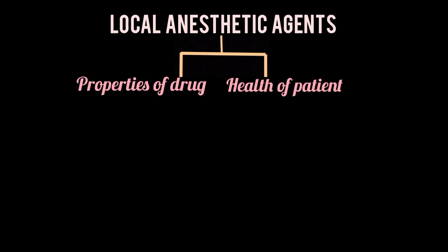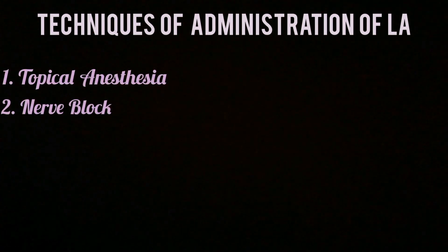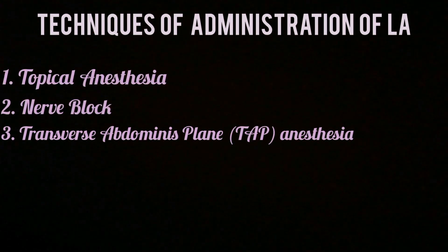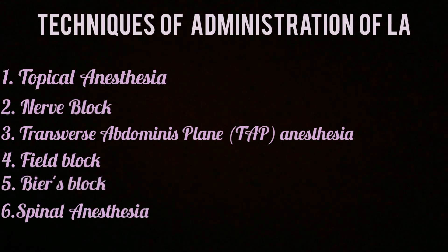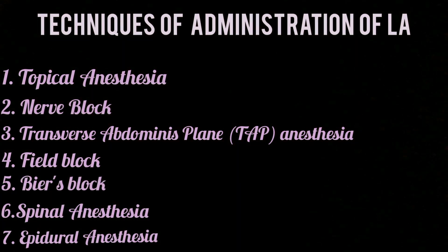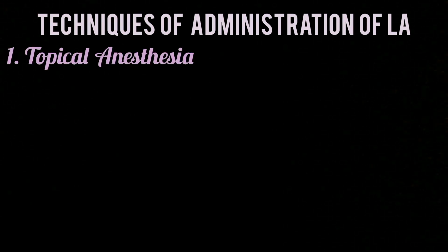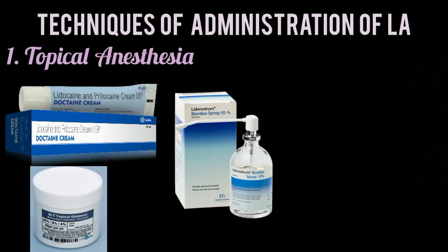After selecting an appropriate local anesthetic based on the properties of the drug and the health of the patient, the next step is to choose a safe and effective technique to administer the drug. These techniques include topical anesthesia, nerve block, transverse abdominis plane anesthesia, field block, Bier's block, spinal anesthesia, and epidural anesthesia.